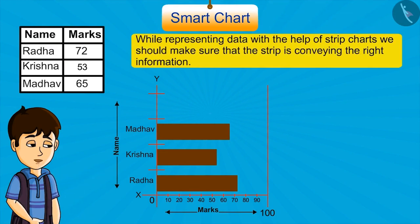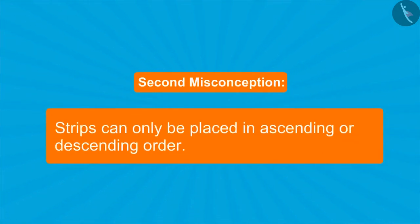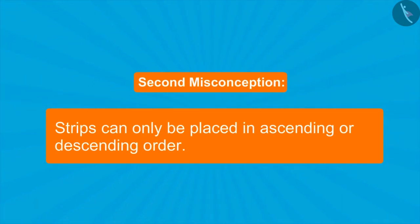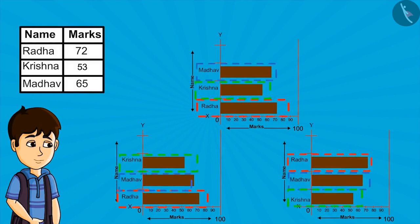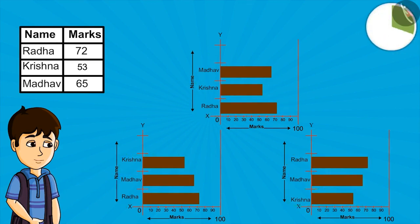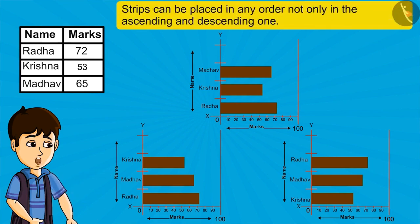So kids, while representing data with the help of strip charts, we should make sure that the strip is conveying the right information. Sometimes we also have this confusion — whether we can place strips only in ascending or descending order. But kids, we can place strips in any order. We only need to keep in mind that the strip represents the right value. Look at these three charts carefully — you can rightly interpret data from all three of them. So we can say strips can be placed in any order, not only in ascending and descending order.